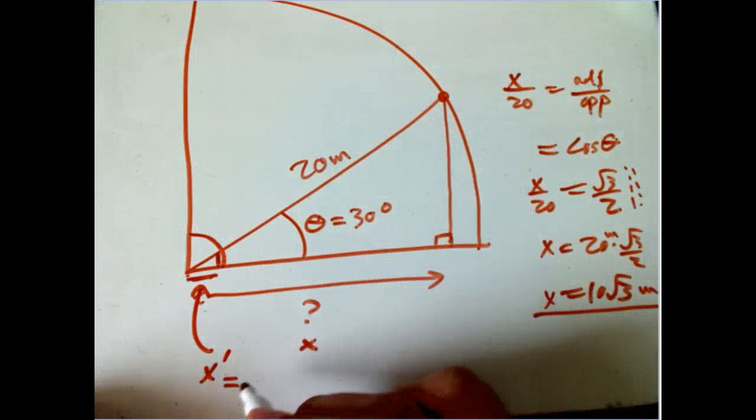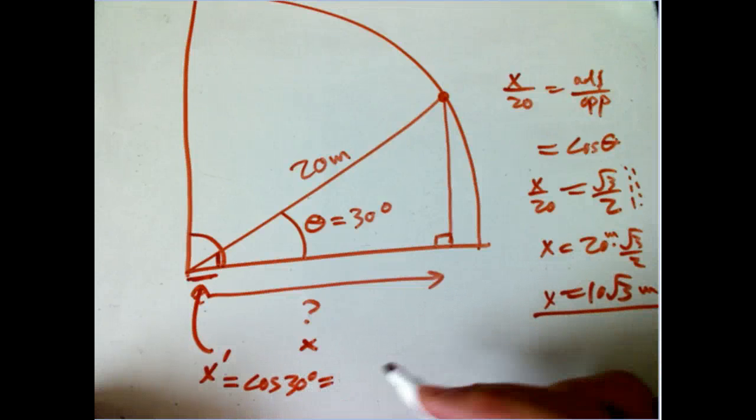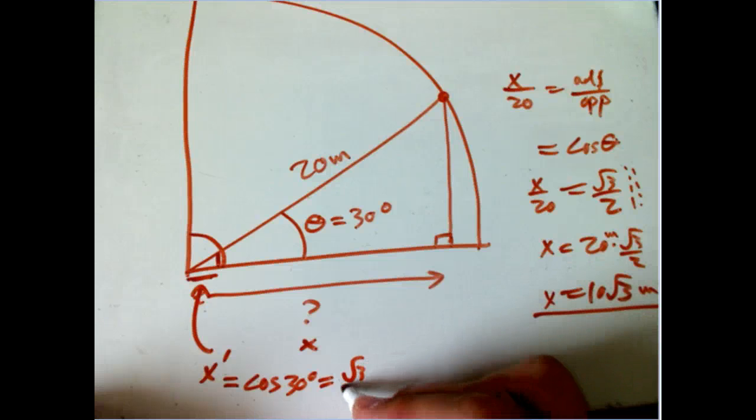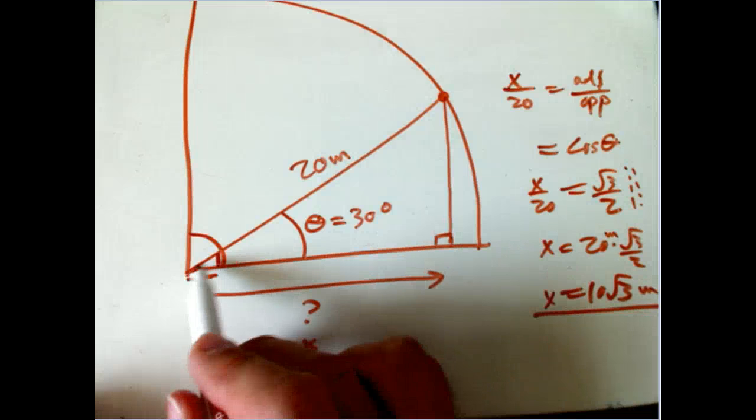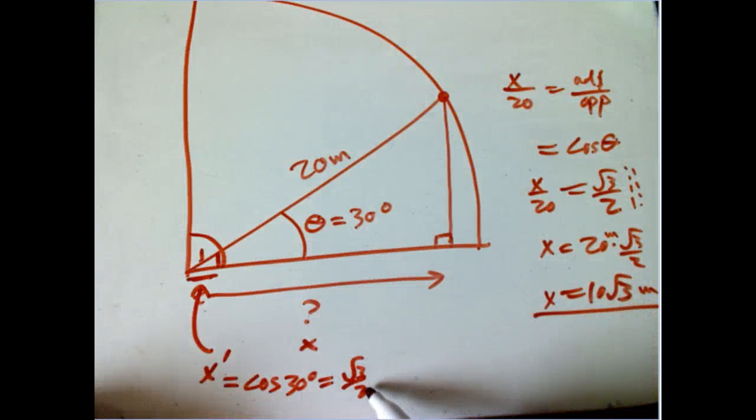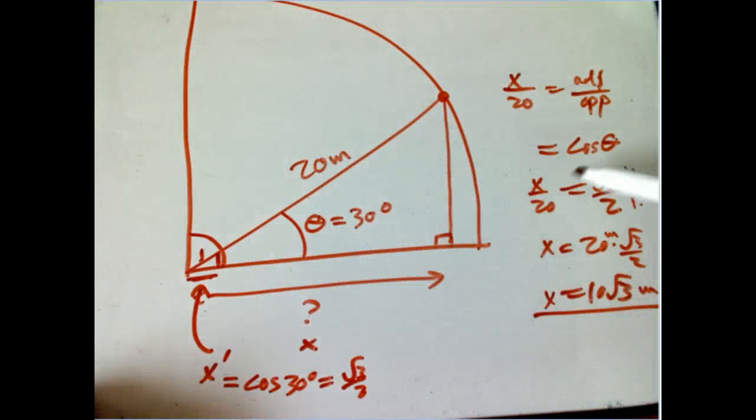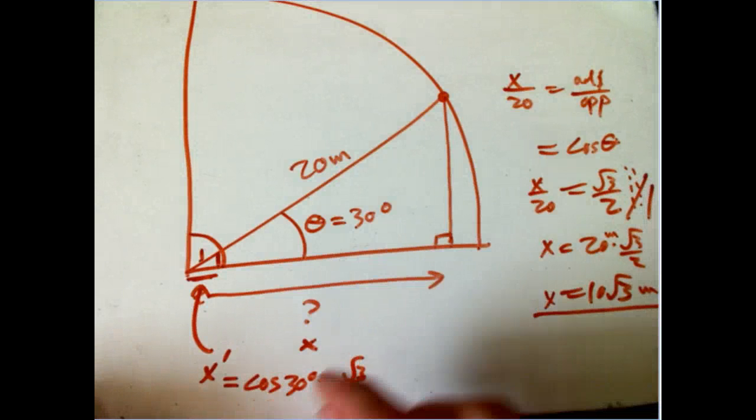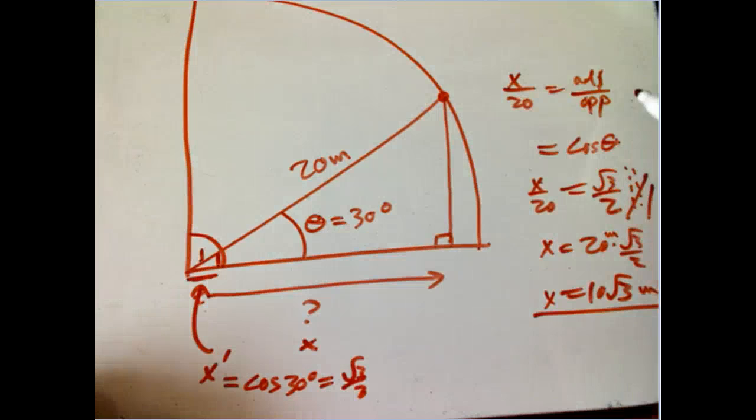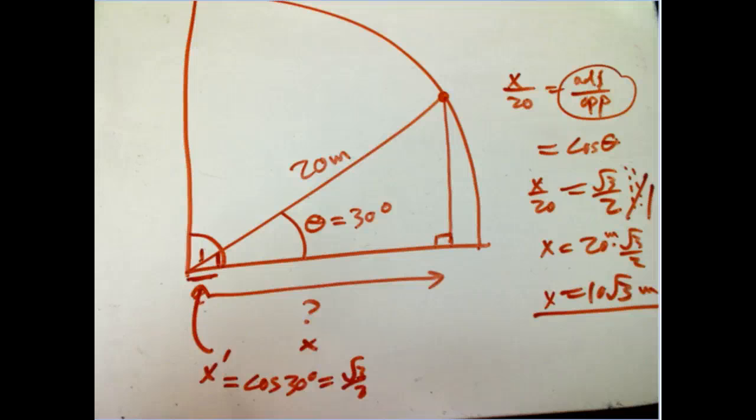That's a 30 degree angle still in that small triangle, because it's a similar triangle. And so that x prime is exactly cosine of 30 degrees, or pi over 6, which is root 3 over 2. Then I've just got a similar triangle situation. I've got 1 is to root 3 over 2, as x is to 20. You get the same answer. They really are equivalent.